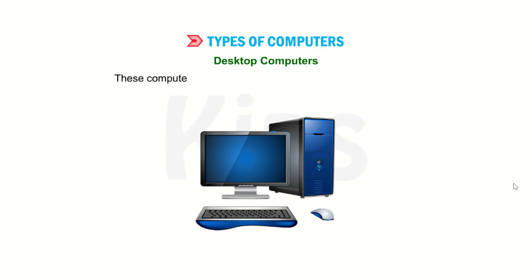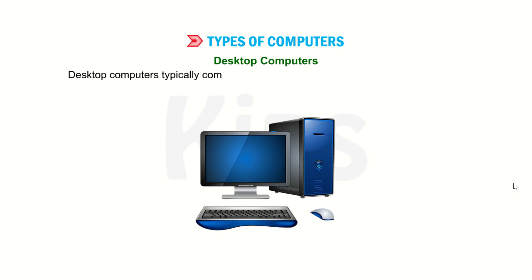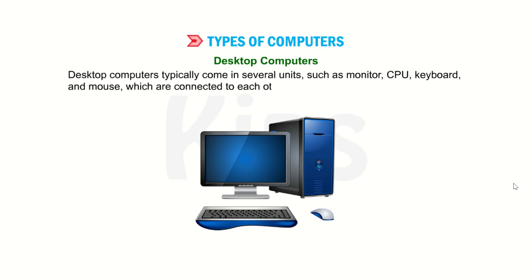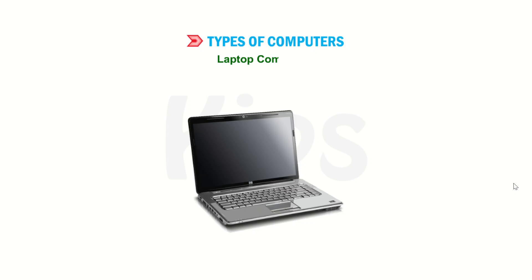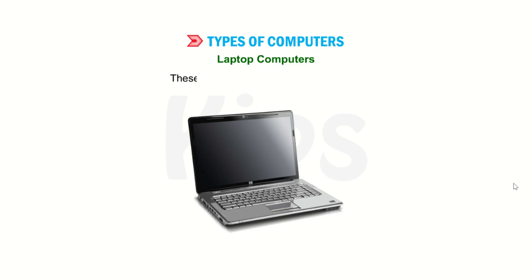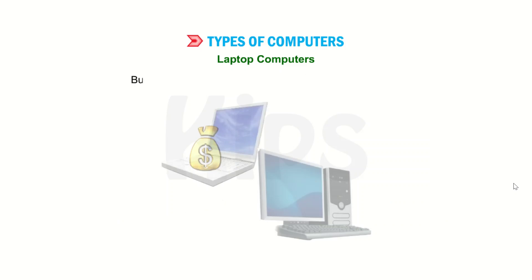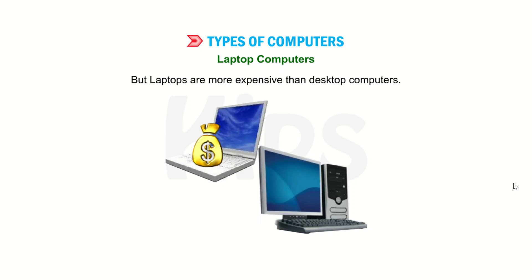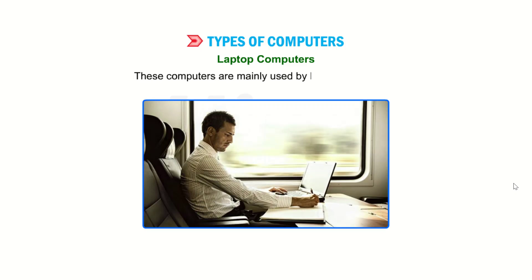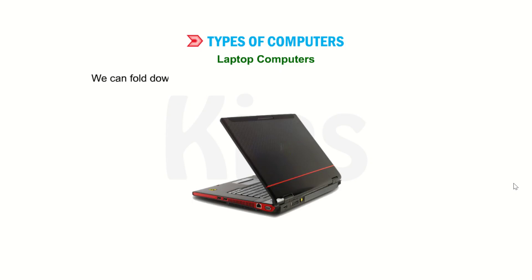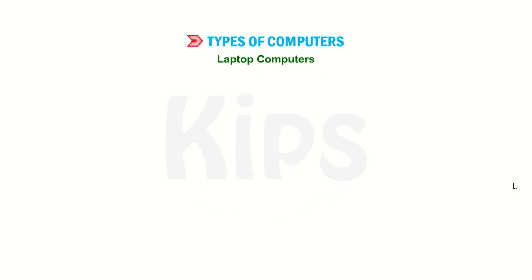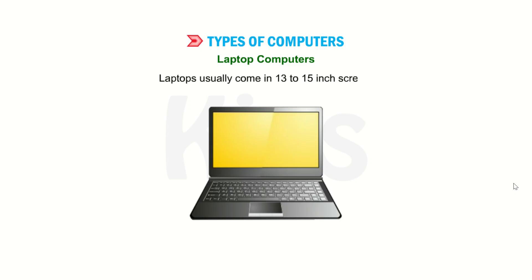Desktop computers are designed to fit comfortably on top of a desk. They typically come in several units such as monitor, CPU, keyboard and mouse, which are connected to each other and work as a single unit. Laptop computers are small in size and can be placed on the lap. These are battery-operated and portable. We can perform all the tasks as we do on a desktop, but laptops are more expensive than desktop computers. They are mainly used by business travelers. Laptops usually come with a 13 to 15 inch screen.